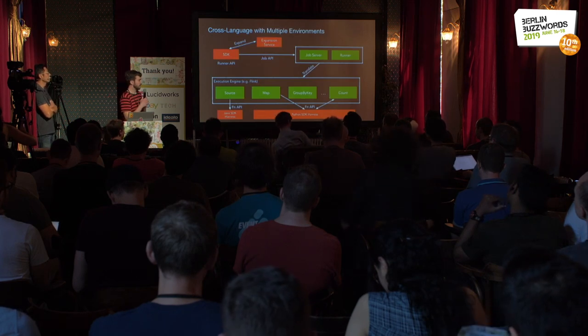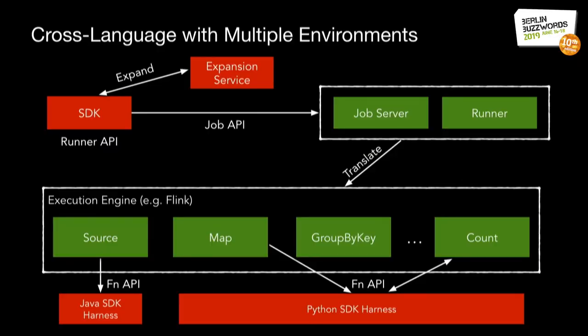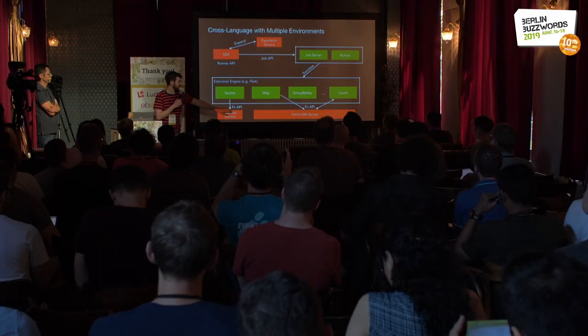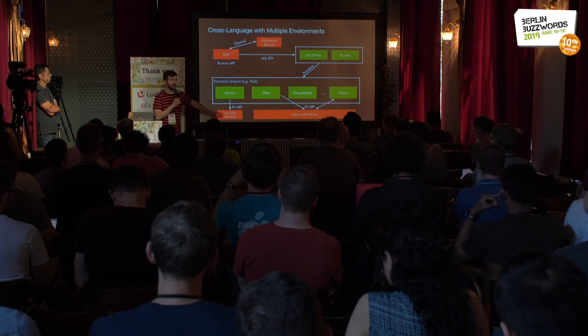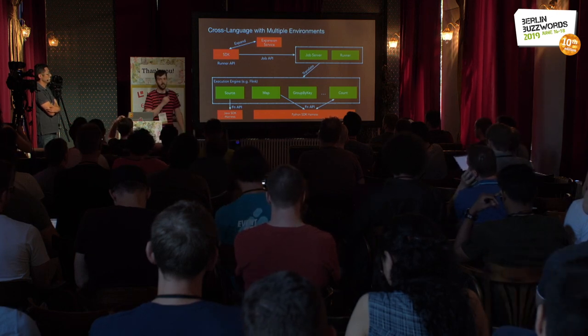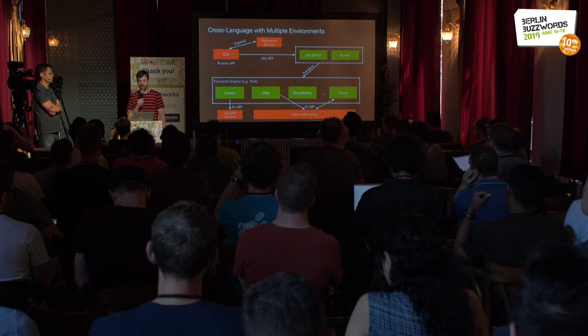The expansion service operates at the SDK level when you create the pipeline, and everything afterwards is handled transparently. Every executable transform has an environment specified — if it's Java, the Java SDK harness is loaded; if it's Python, the Python harness is used. This is still an experimental feature, but it has a lot of potential and it's great to see it already working.